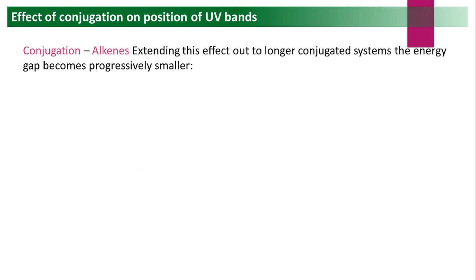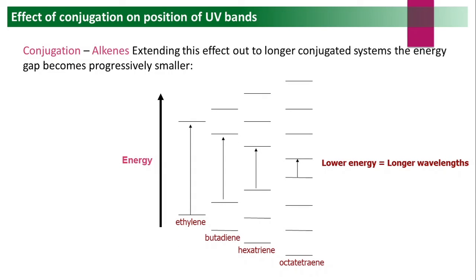Extending this to longer conjugated systems: as conjugation increases, the energy gap becomes progressively smaller. With more conjugated double bonds, less energy is required for excitation, and since energy and wavelength are inversely proportional, lower energy means longer wavelength. Therefore, as conjugation increases, absorption shifts to longer wavelength and lambda max increases.